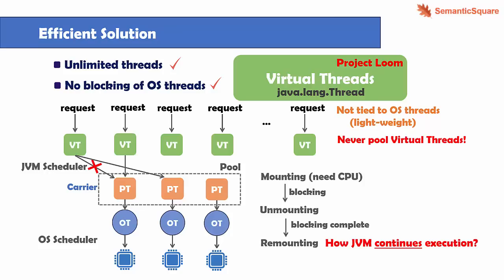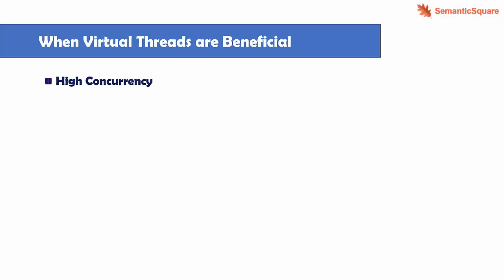The next thing is to see when virtual threads are most beneficial. If the need is to handle a large number of concurrent tasks, we can create a large number of virtual threads. So if there is a need for high concurrency and if there are many blocking operations — like a blocking I/O, downloading a web page, or a sleep operation — then virtual threads will be beneficial.